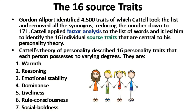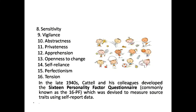Cattell's theory of personality describes 16 personality traits that each person possesses to varying degrees. They are: warmth, reasoning, emotional stability, dominance, liveliness, rule-consciousness, social boldness, sensitivity, vigilance, abstractness, privateness, apprehension, openness to change, self-reliance, perfectionism, and lastly tension.